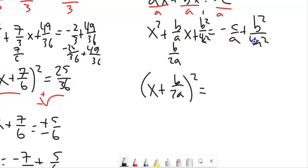And I can combine some terms over here. My common denominator is 4A squared. I already have an A here. So I could multiply this by 4A over 4A.